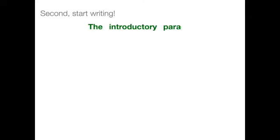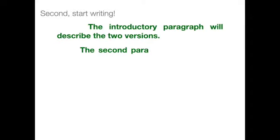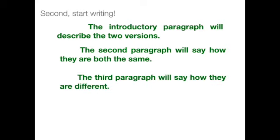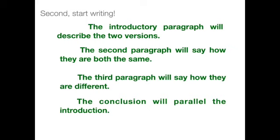The introductory paragraph is going to describe the two different versions. The second paragraph is going to say how they're both the same. The third paragraph is going to say how they're both different, and then the conclusion is going to parallel the introduction. That right there is basically what your informative text is going to look like.